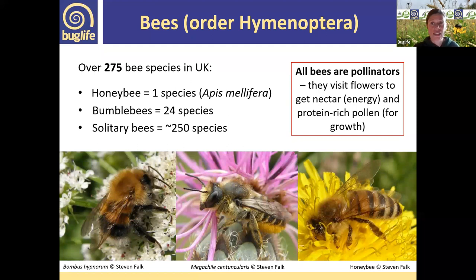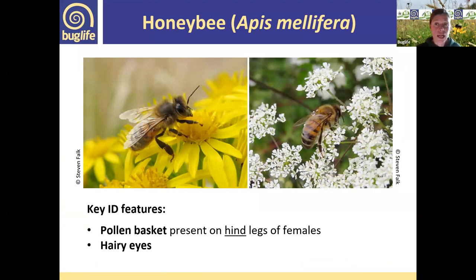There are over 270 species of bees in the UK — that's 24 species of bumblebee and around 250 species of solitary bee. That number is always approximate as we discover new species arriving from the continent. First up, let's have a quick look at our honeybee, probably the most common bee in the world.